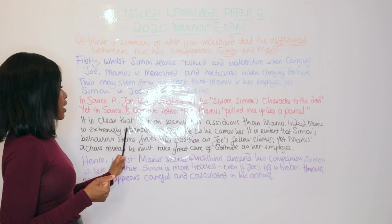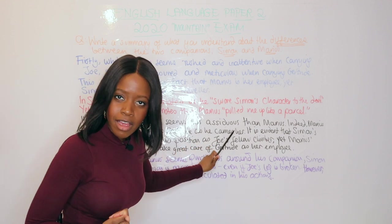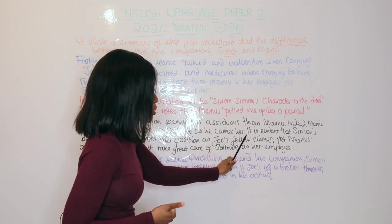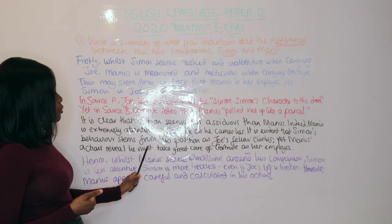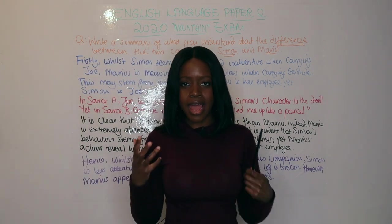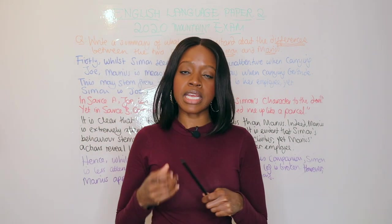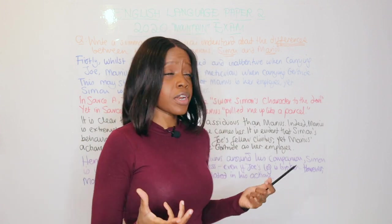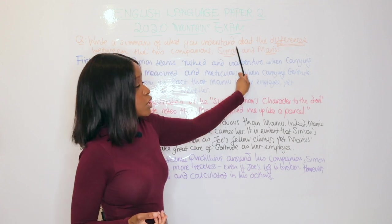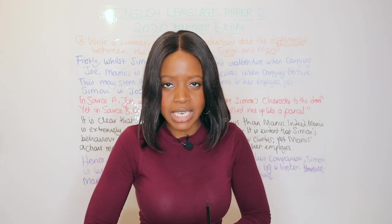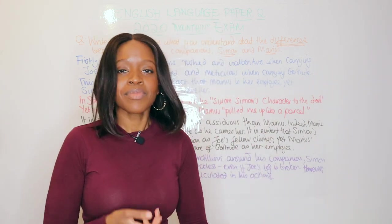The explanation is where the bulk of your marks come from. 'It is clear that Simon seems less assiduous — meaning careful — than Marius. Indeed, Marius is extremely attentive to Gertrude as he carries her. It is evident that Simon's behaviour stems from his position as Joe's fellow climber, yet Marius's actions reveal he must take great care of Gertrude as her employee.' Here I'm using ambitious vocabulary while reinforcing that the key reason for their difference is that one is hired help and the other is simply climbing with a friend.